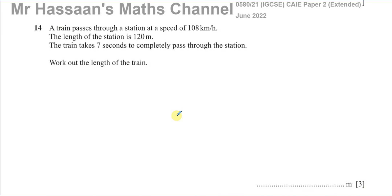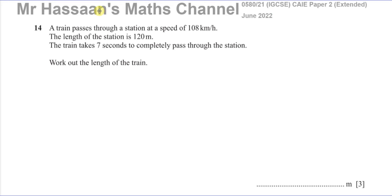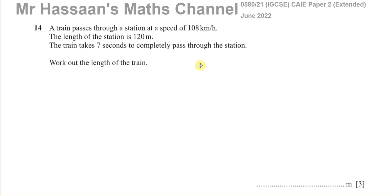Welcome back, this is Mr. Hassan's math channel. I'm now answering question number 14 from the June 2022 Cambridge 0580 IGCSE paper — this is paper 2, variant 1. This question is about a train passing through a station at a speed of 108 kilometers per hour. The length of the station is 120 meters, and it takes seven seconds to completely pass through the station. Work out the length of the train.